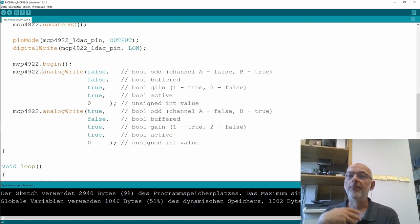Otherwise, the full-fledged analog write statement - the first boolean is the channel you want to write to. Channel A is false, B is true. Then comes a boolean if you want to use the buffered reference voltage inputs or not. False or true, it's false because we're using the 3.3 volt rail from the Arduino, so no need to buffer anything.